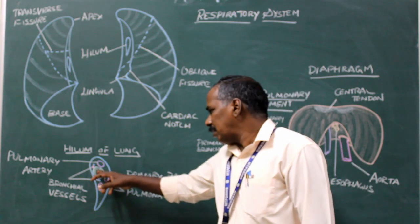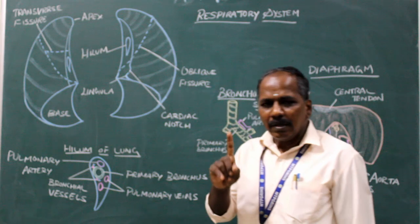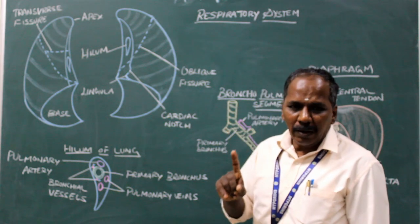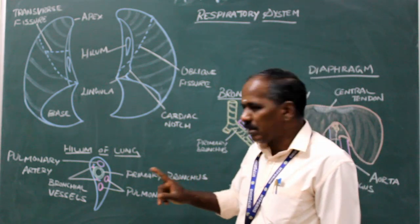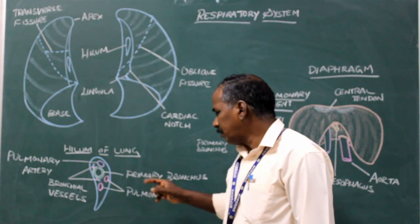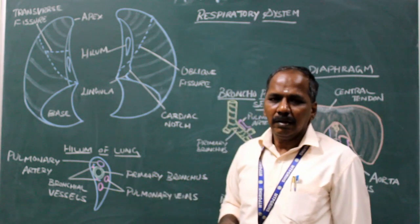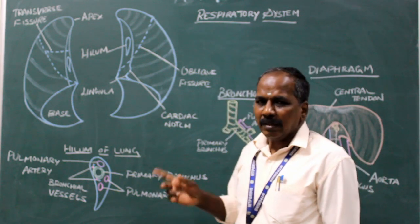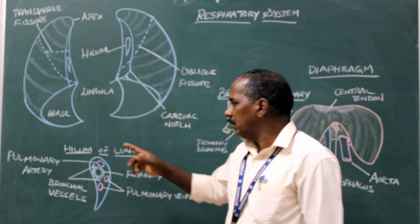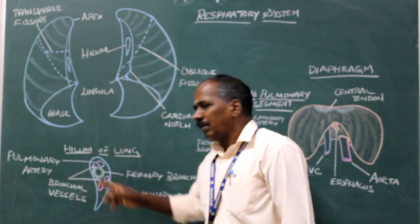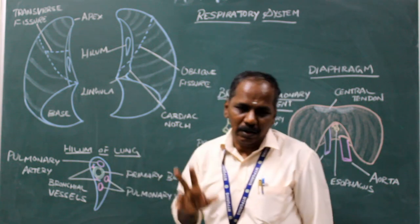There is a single primary bronchus in the case of the left lung, whereas in the case of the right lung there are two primary bronchi.